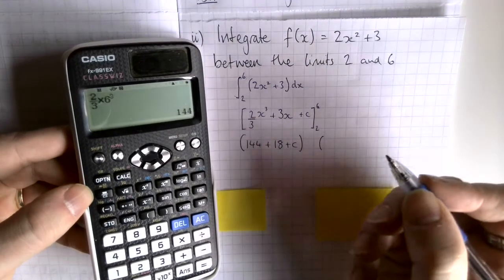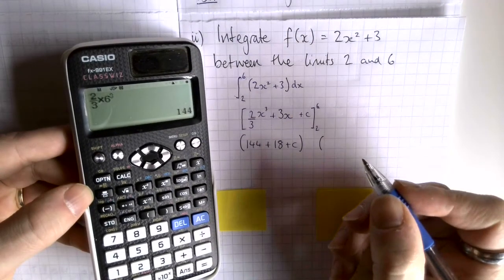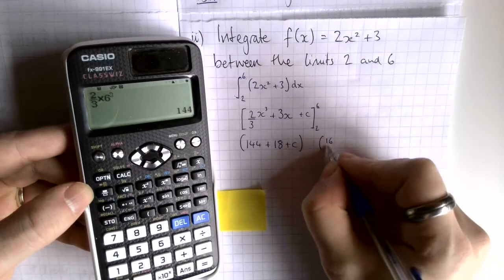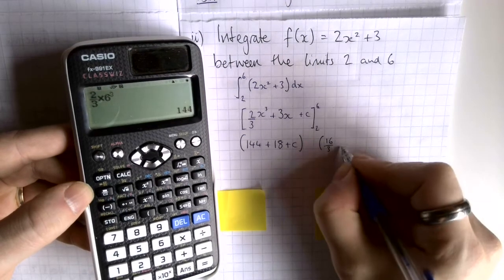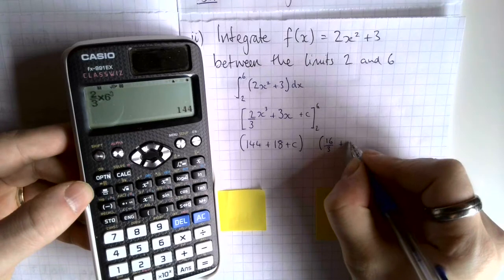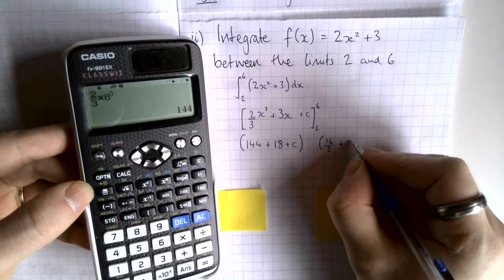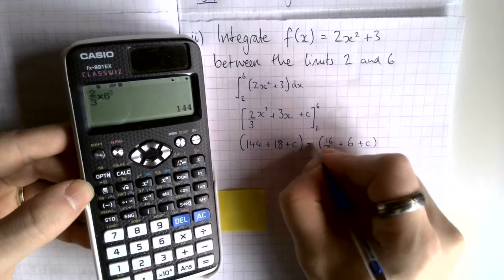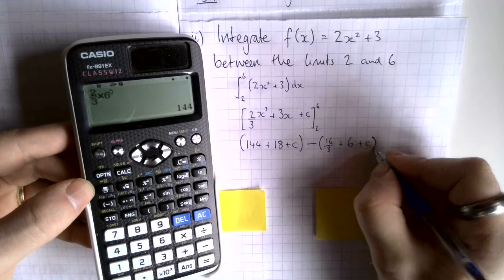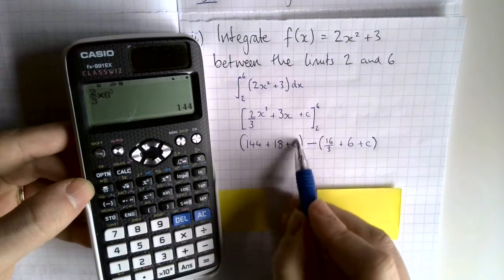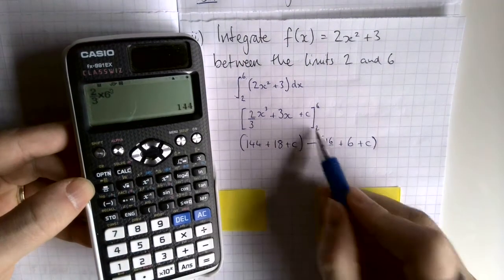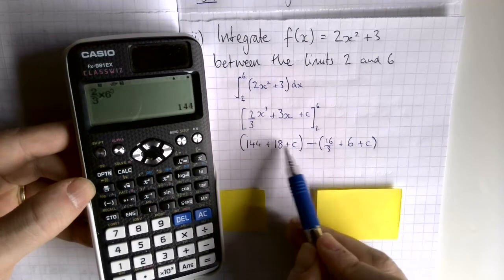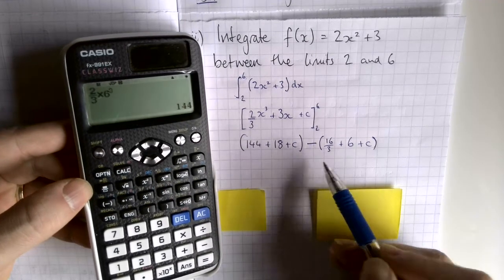It's very common to put each substituted result in brackets before subtracting, because if there are negatives involved it's very easy to get muddled. So we have (144 + 18 + c) minus (16/3 + 6 + c).